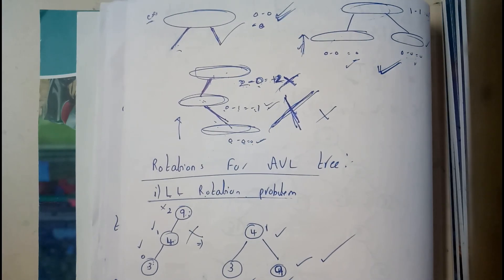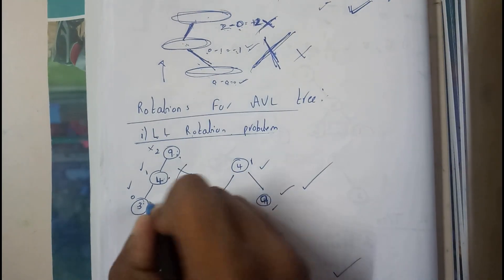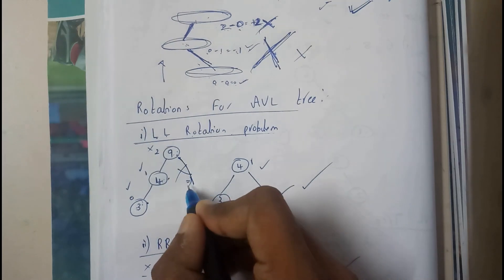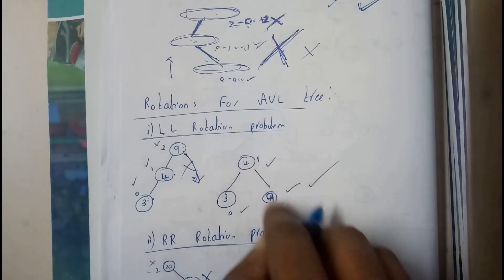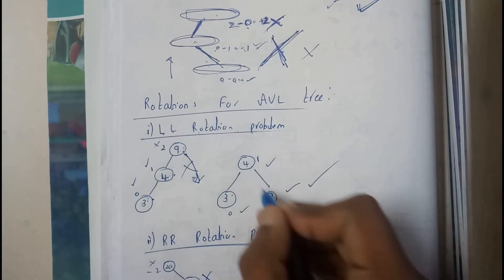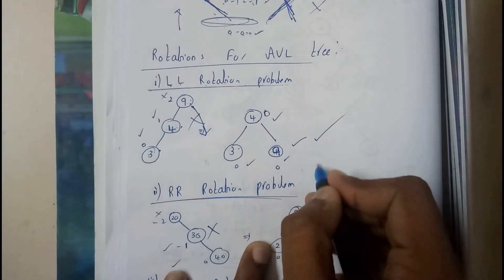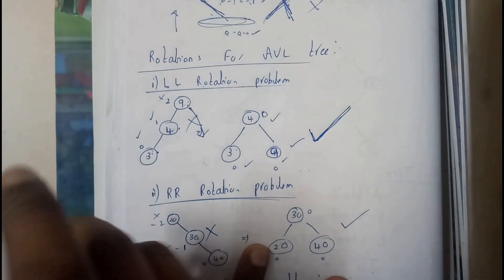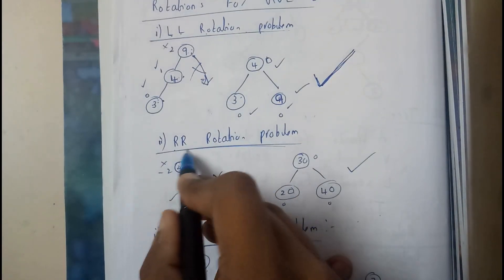There are four problems we face while constructing an AVL tree. The first one is the left-left rotation problem. We rotate to the right side so that it becomes a balanced tree with three, four, nine — which gives balance factors of zero, zero, zero. In the problem I will tell you which rotation to do, so just observe carefully. Moving on: the right-right rotation problem.